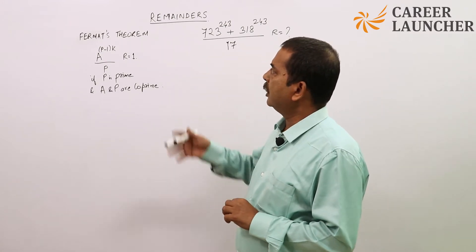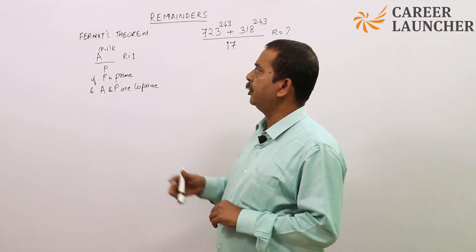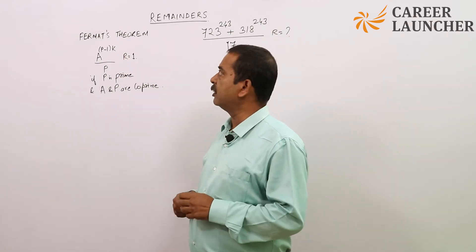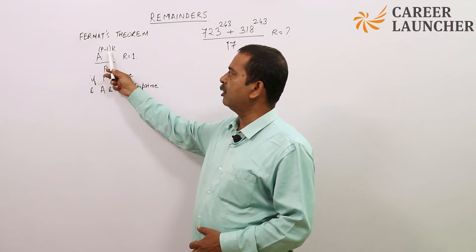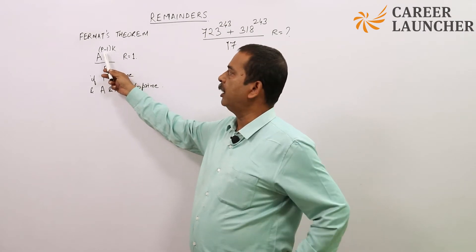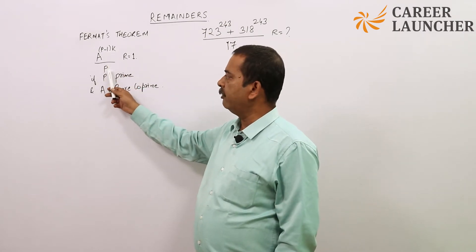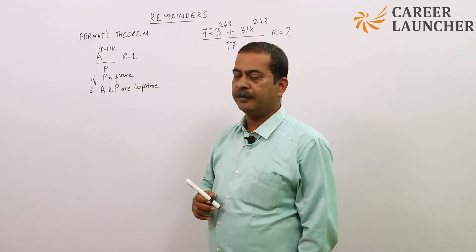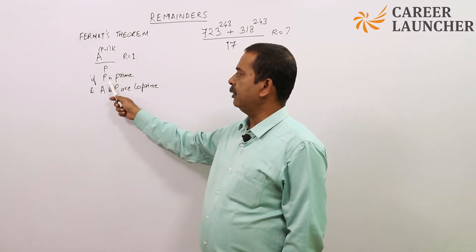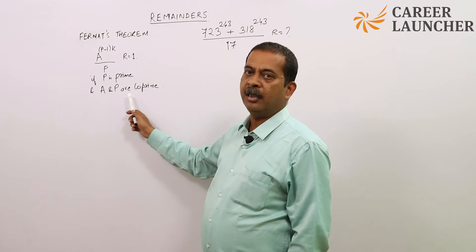There's an application which I am talking about in remainders. There's one theorem which is very helpful called Fermat's theorem. It says a to the power (p-1)k, which means a multiple of (p-1), when divided by p the remainder is always 1, where p the denominator is prime and a and p are co-primes.